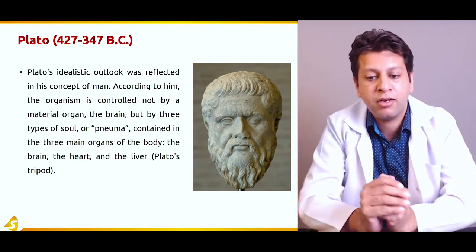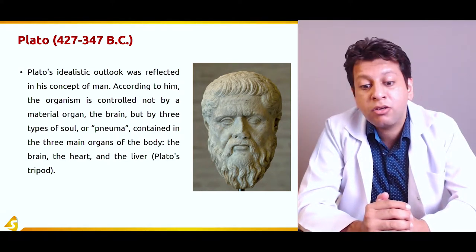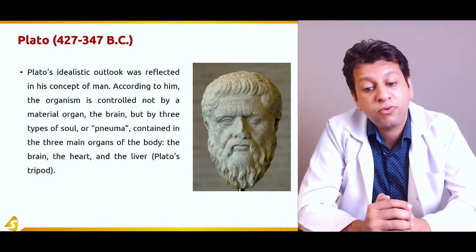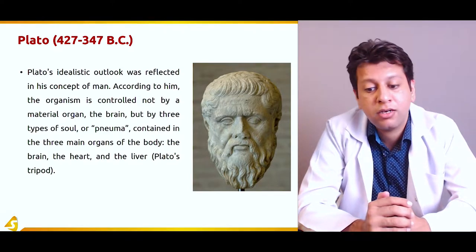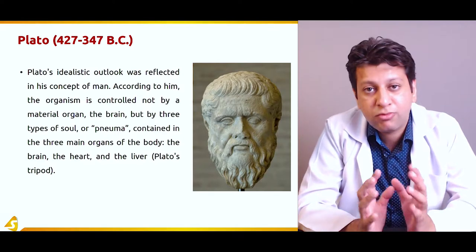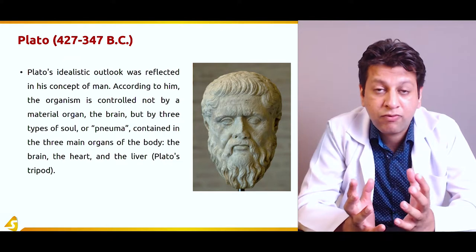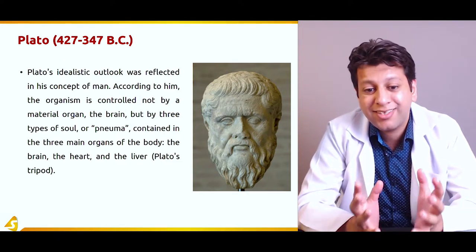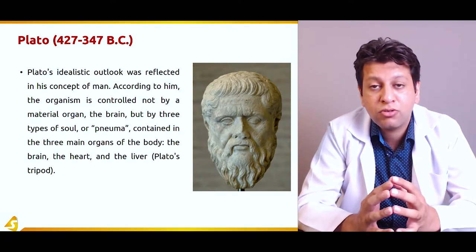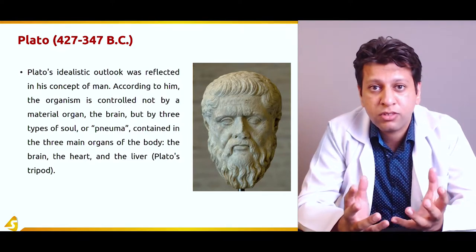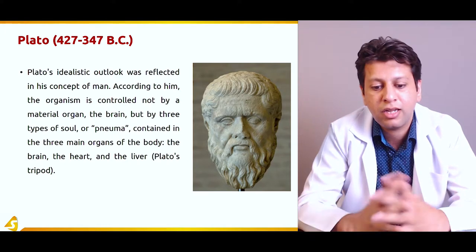According to Plato, the organism is controlled not by a material organ but by three types of soul — called Pneuma — contained in three main organs of the body: the brain, the heart, and the liver. This is known as Plato's tripod. At this stage there was not much dissection being carried out, so the concept was that three souls reside in these three organs.